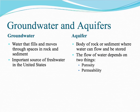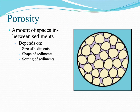Versus an aquifer — an aquifer is a body of rock or sediments where water can flow and be stored. The flow of water depends on two things: porosity and permeability. Porosity — you can tell something about the word based on its root, 'pore.' Pore spaces or pores are just tiny holes.